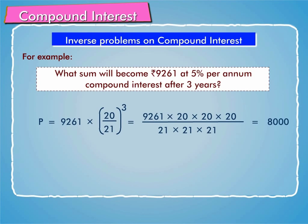P is equal to 9,261 into 20 into 20 into 20 by 21 into 21 into 21, which is equal to 8,000. Therefore, principal is equal to Rs. 8,000.